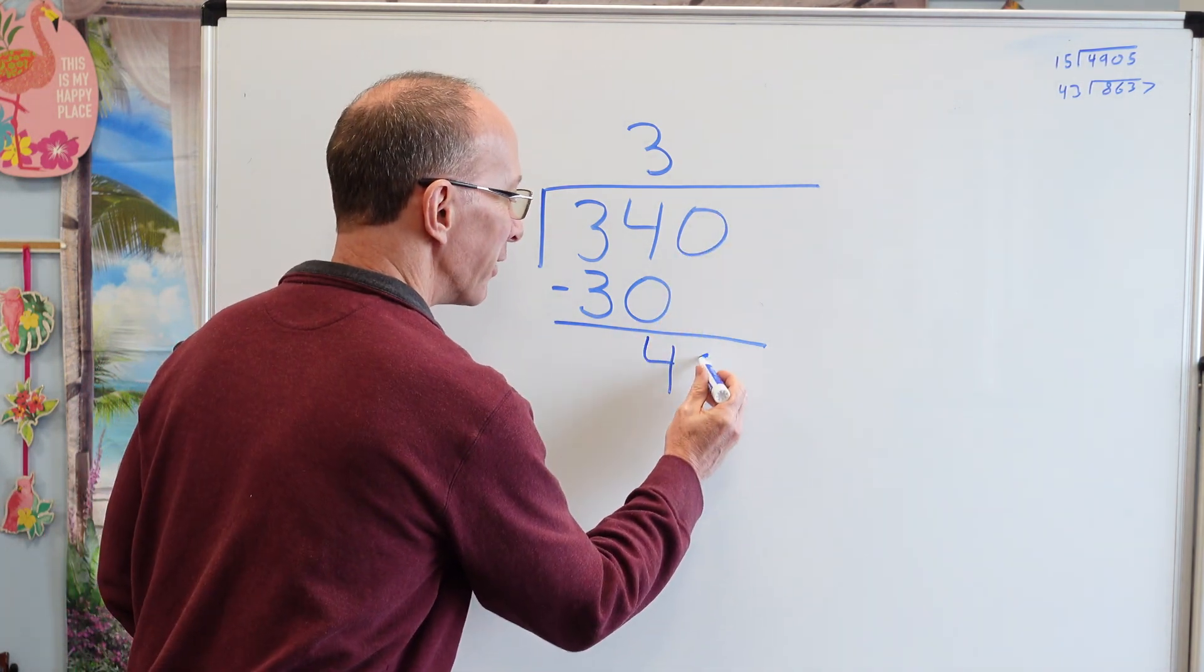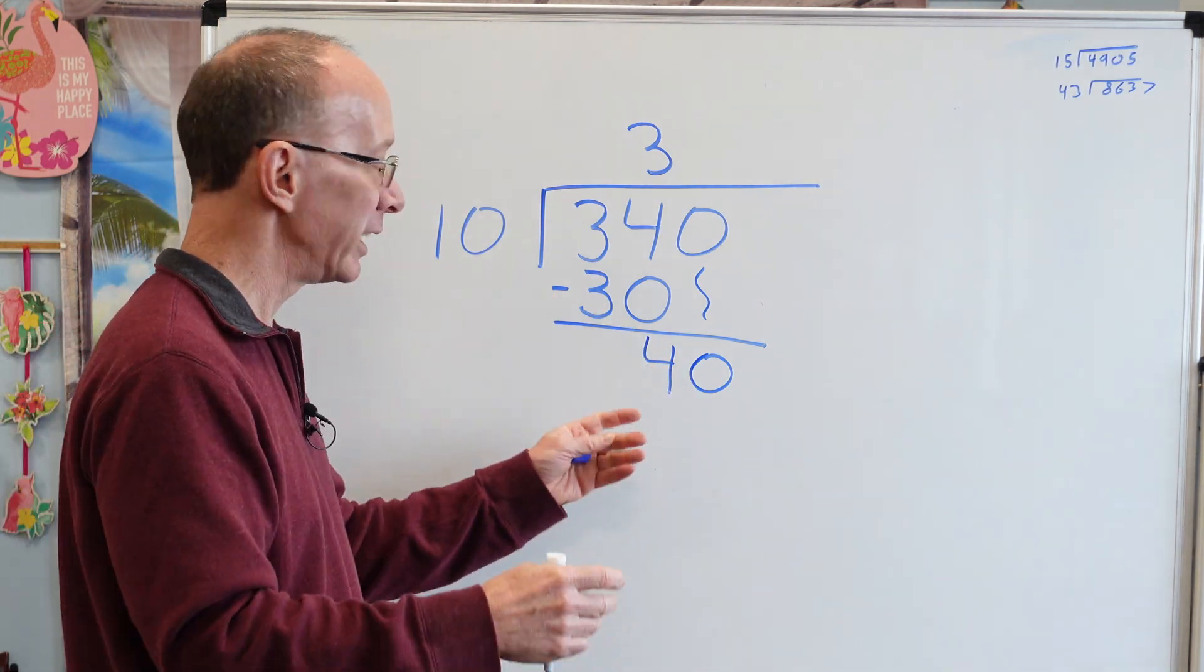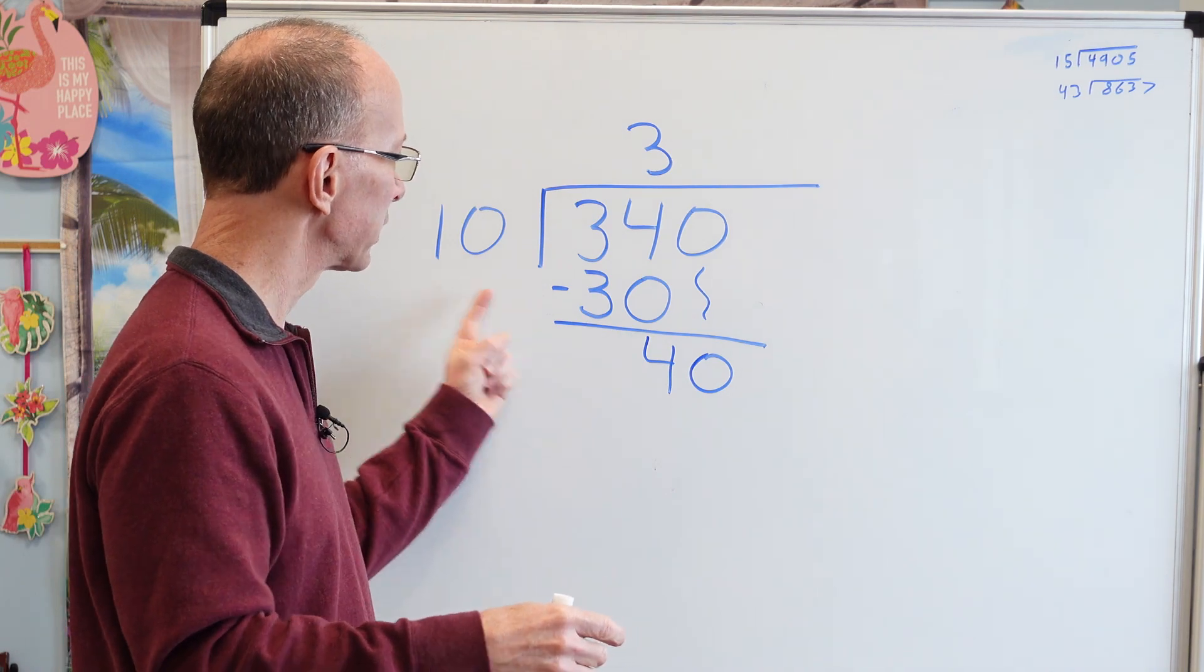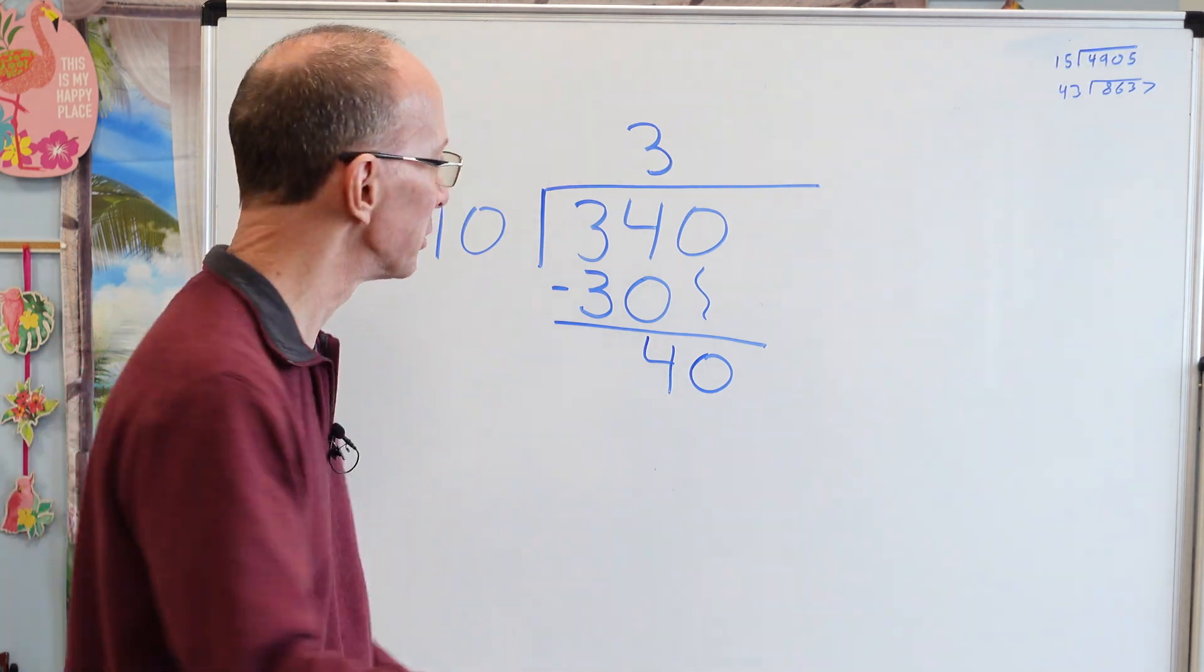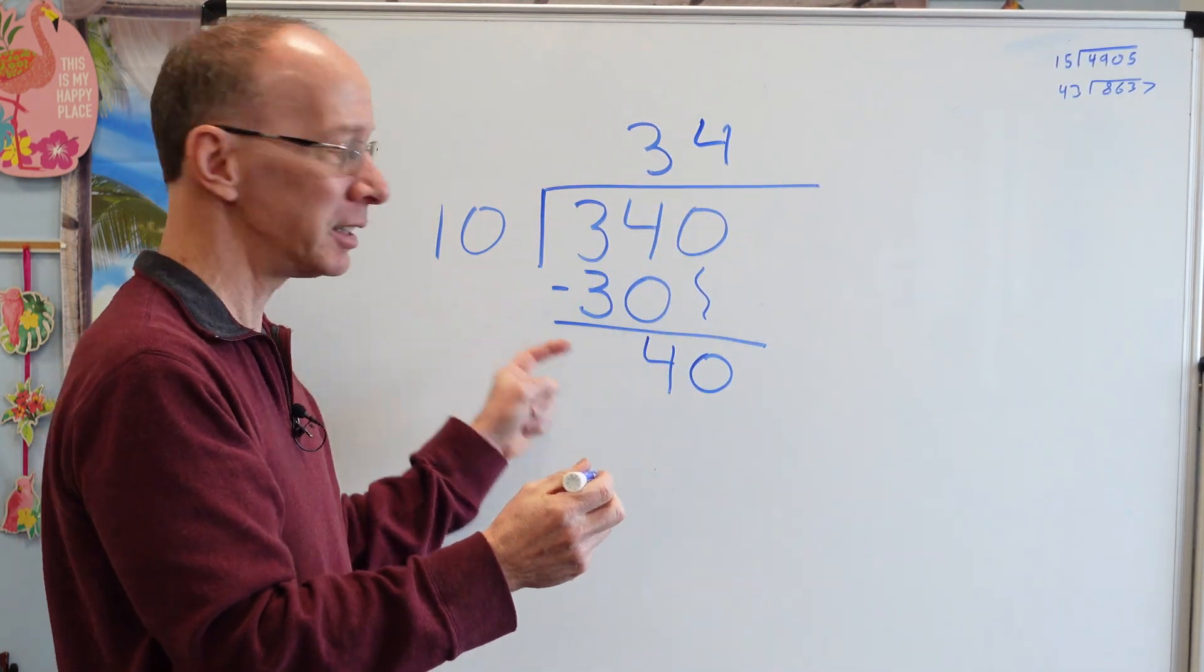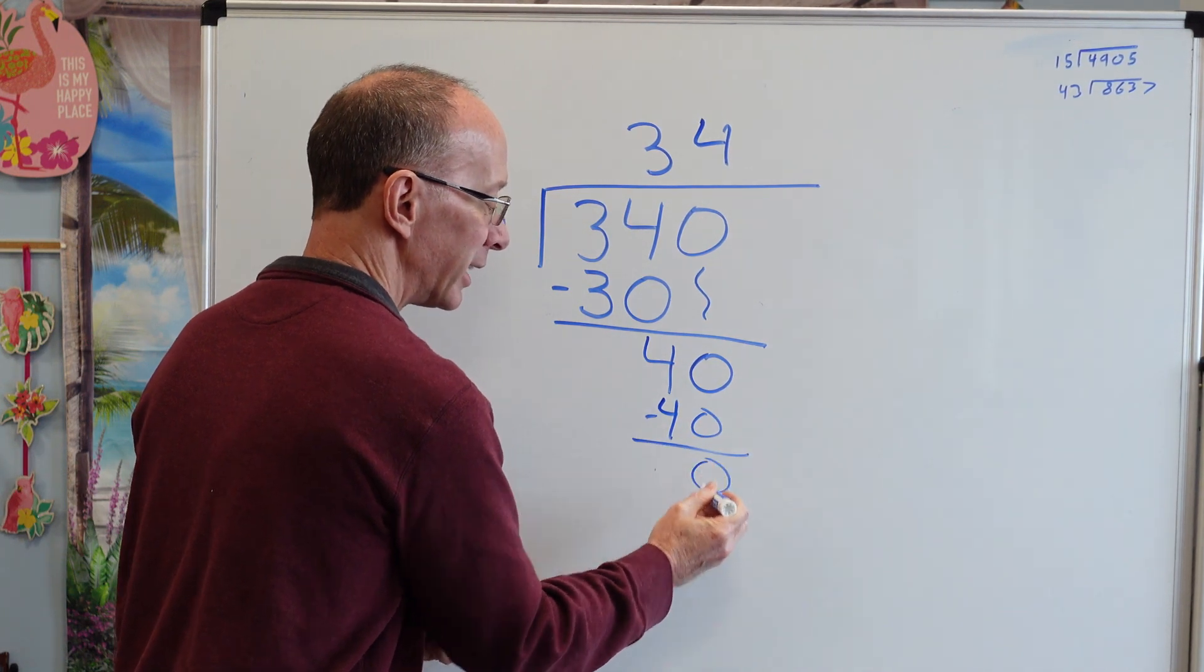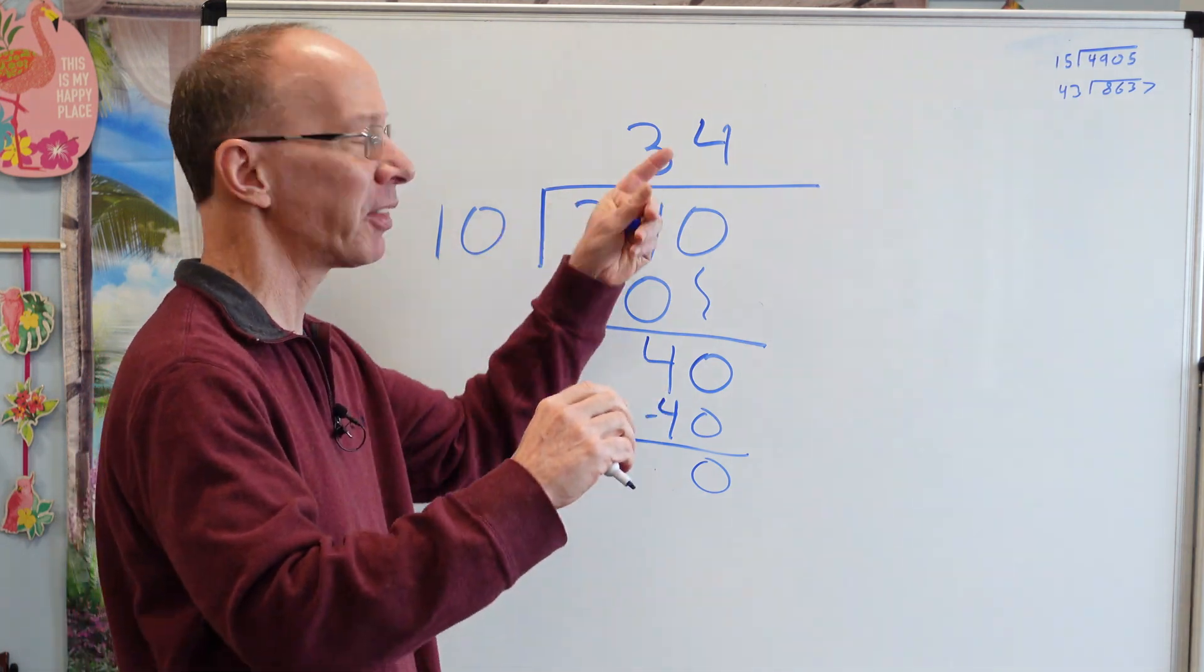Put it right down here. All right? Then you go right into division. Again, you start the whole process over. How many times can I put 10 into 40? 10, 20, 30, 40. 4 times. So I put 4 right here. 4 times 10 equals 40. Now, you don't have to put that 0 as a remainder. Just keep it 34.